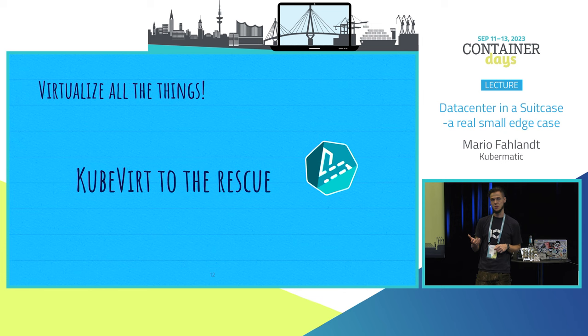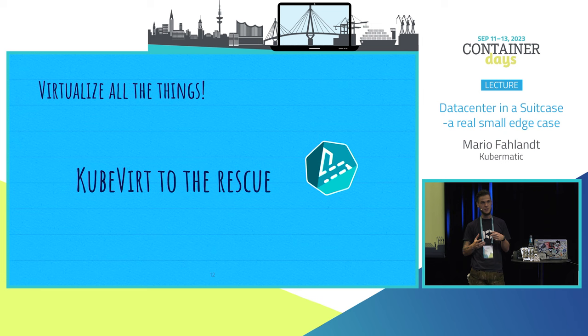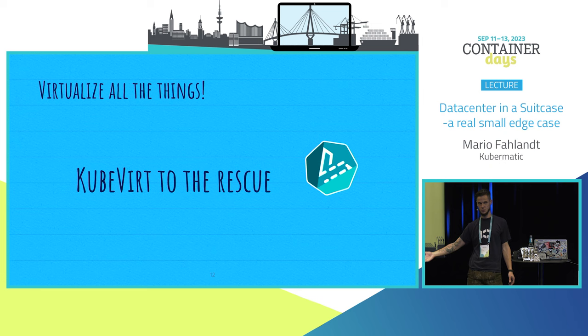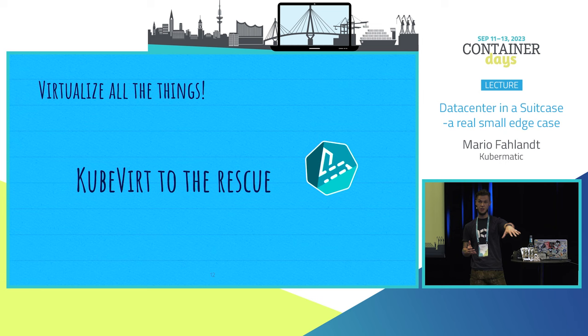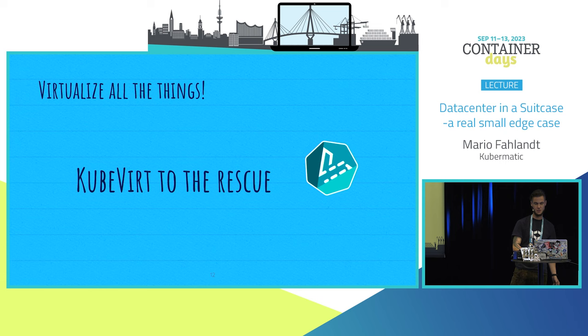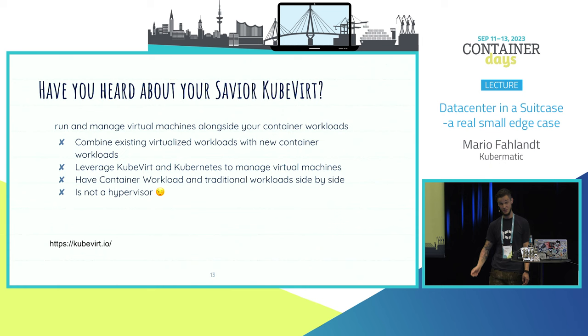What I wanted to add is the possibility to run stuff that cannot run inside of a container - so we have vanilla VMs running too. Because as we know, I've talked to people who said some software probably won't move out of VMs for the next 10 years and cannot be containerized. So the idea is to utilize this Kubernetes cluster and install KubeVirt on it, and with KubeVirt we can spawn VMs inside of the cluster using its hypervisor.